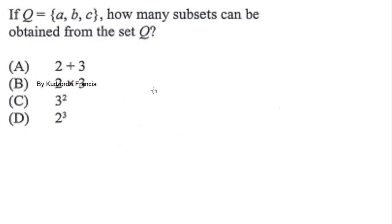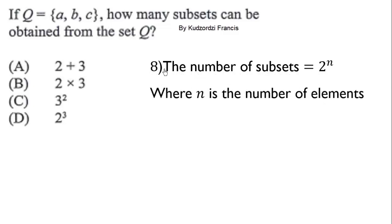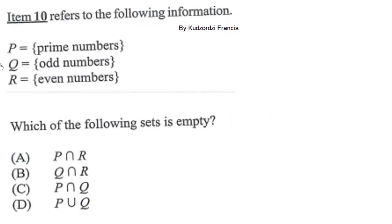Question 8: If Q equals the set with elements a, b, c, how many subsets can be obtained from set Q? The number of subsets is given by 2^n, where n is the number of elements in the set. The given set Q has three elements, so n equals 3. Substitute to get 2^3. Therefore the correct answer is D.